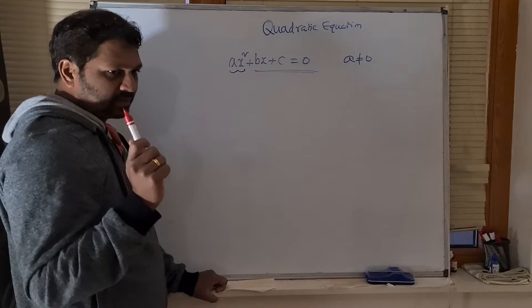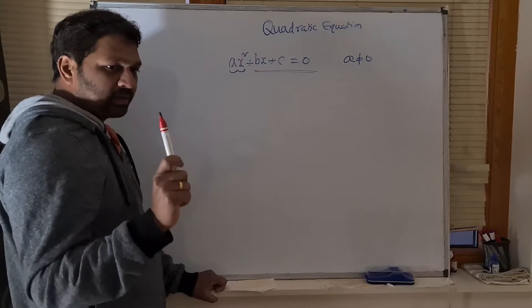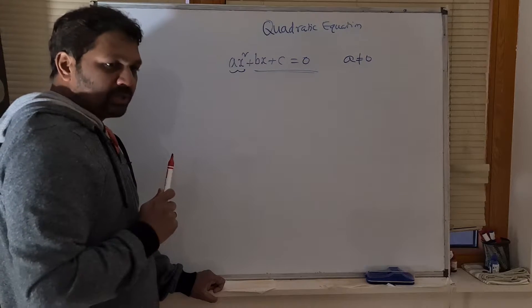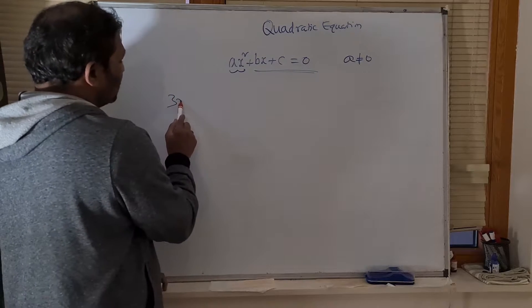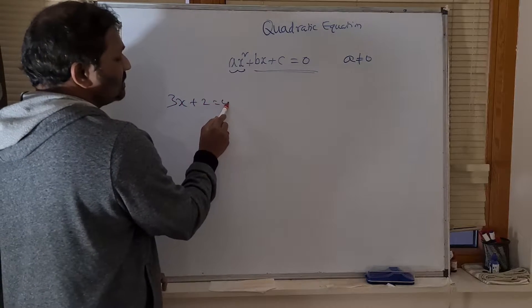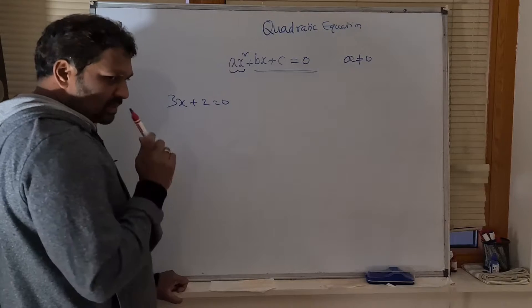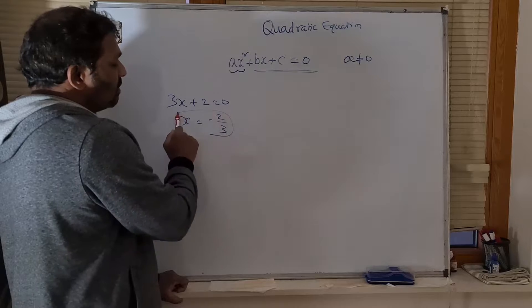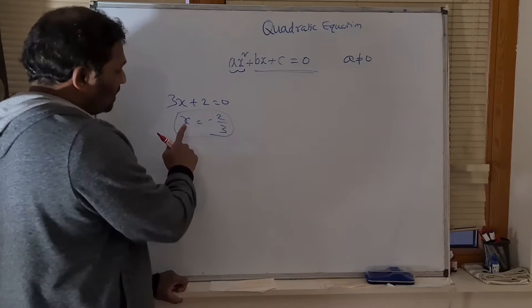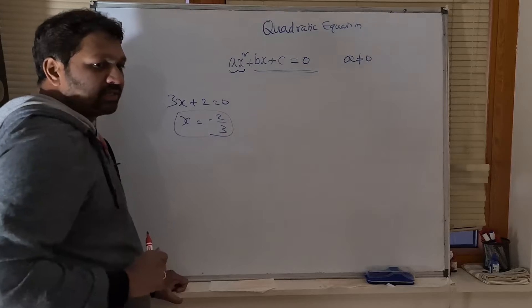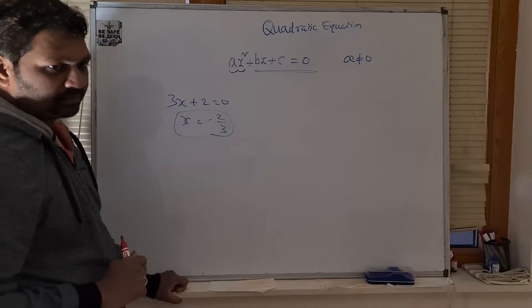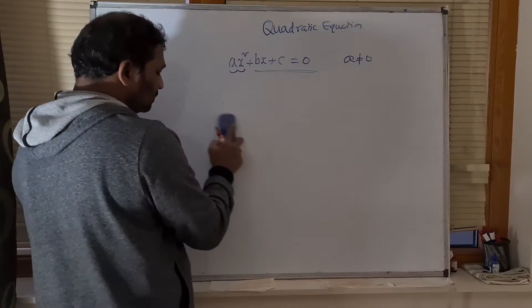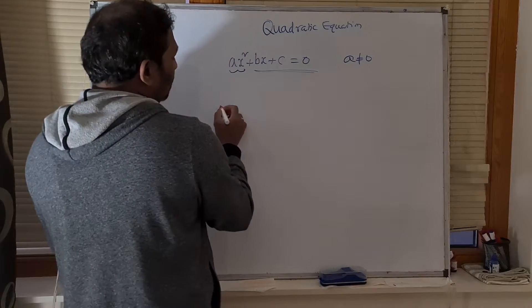A linear equation is different from a quadratic equation. In a linear equation, we have only one solution. In a quadratic equation, we have two solutions. For example, 3x + 2 = 0 — is this a quadratic equation? No. This is a linear equation. If you solve it, you get x = −2/3. This is only one solution, and only this value of x is going to satisfy this equation.